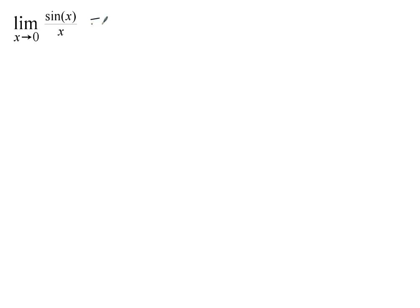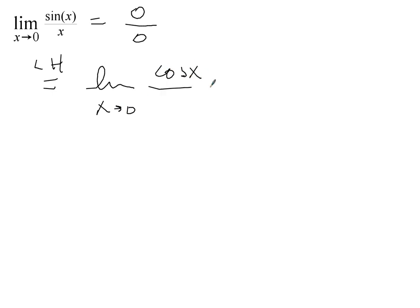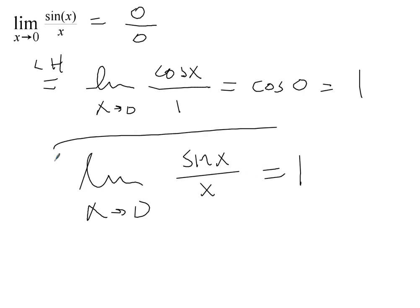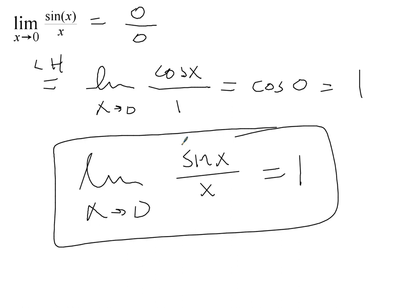If we plug in 0, we end up with the sine of 0, which is 0 over 0 — another indeterminate form. This is a limit you should memorize. It can easily be found using L'Hôpital's rule: we get the limit as x approaches 0 of cosine x over 1, or just cosine of 0, which is 1. So remember that the limit as x approaches 0 of sin(x)/x equals 1. It comes up quite often on the AP test.